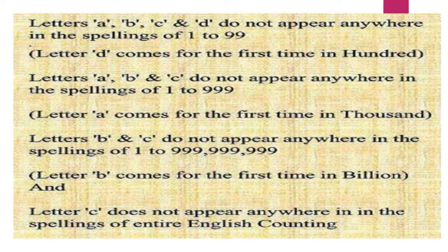Letters A, B, C, and D do not appear anywhere in the spellings of 1 to 99. For example, ONE, TWO, SIXTY — none of these contain A, B, or C. But the letter D comes for the first time in 100, spelled H-U-N-D-R-E-D. Similarly, letters A, B, and C do not appear in the spellings of 1 to 199 either.